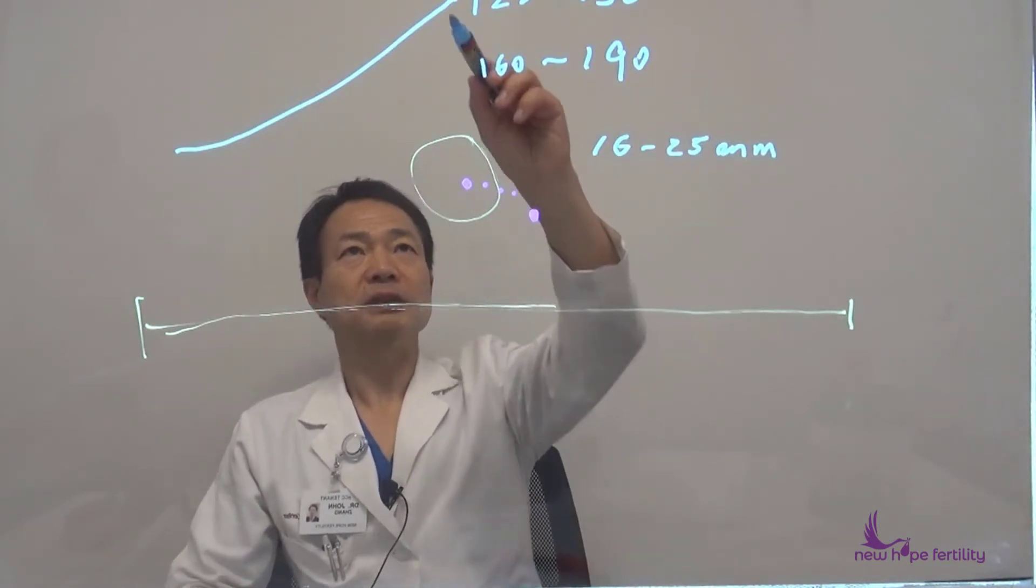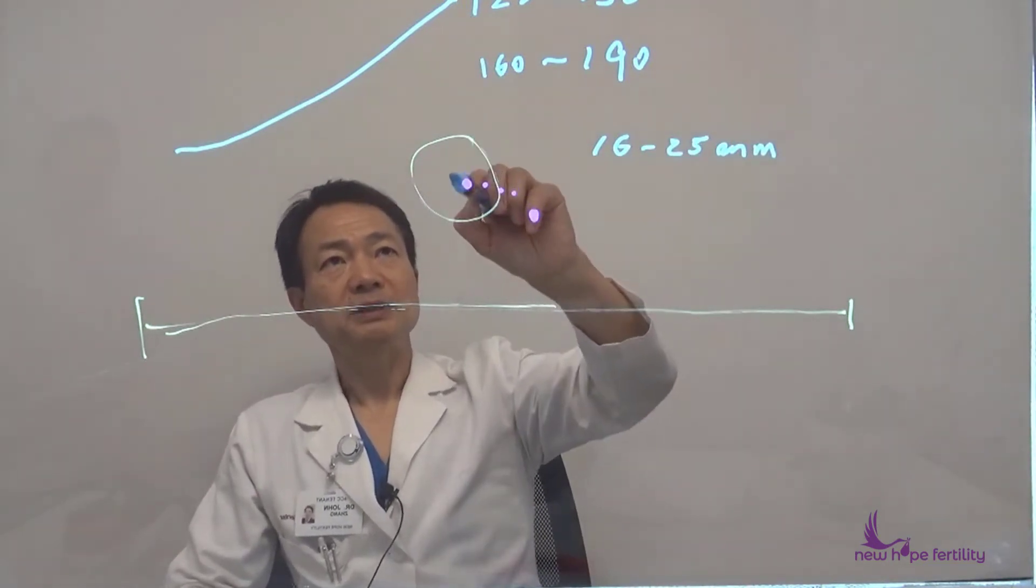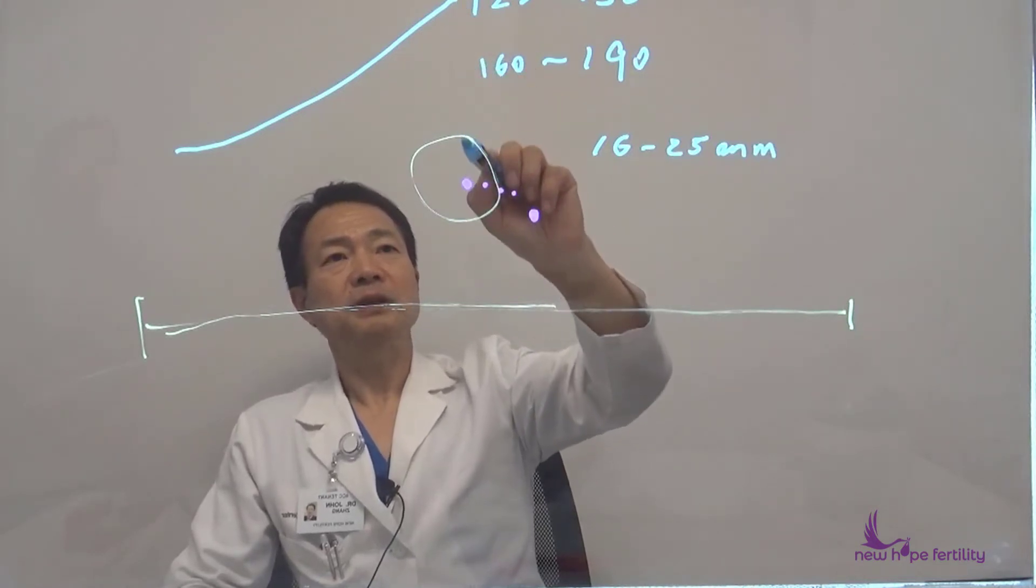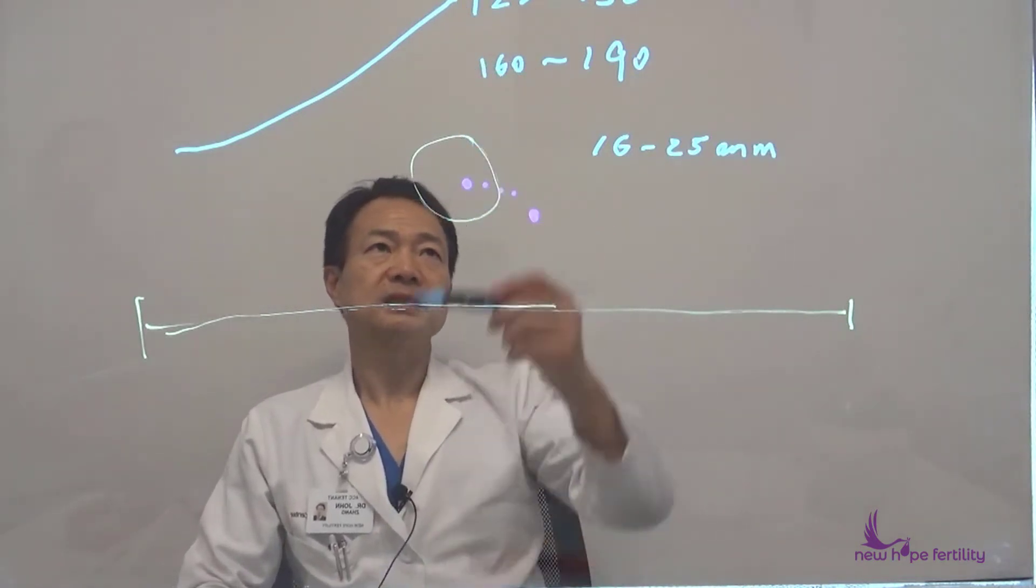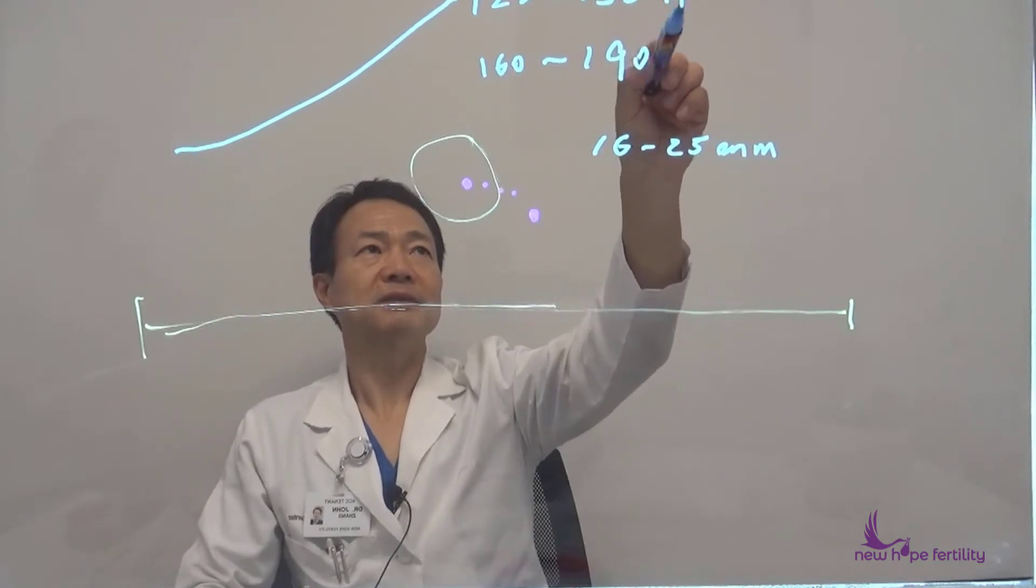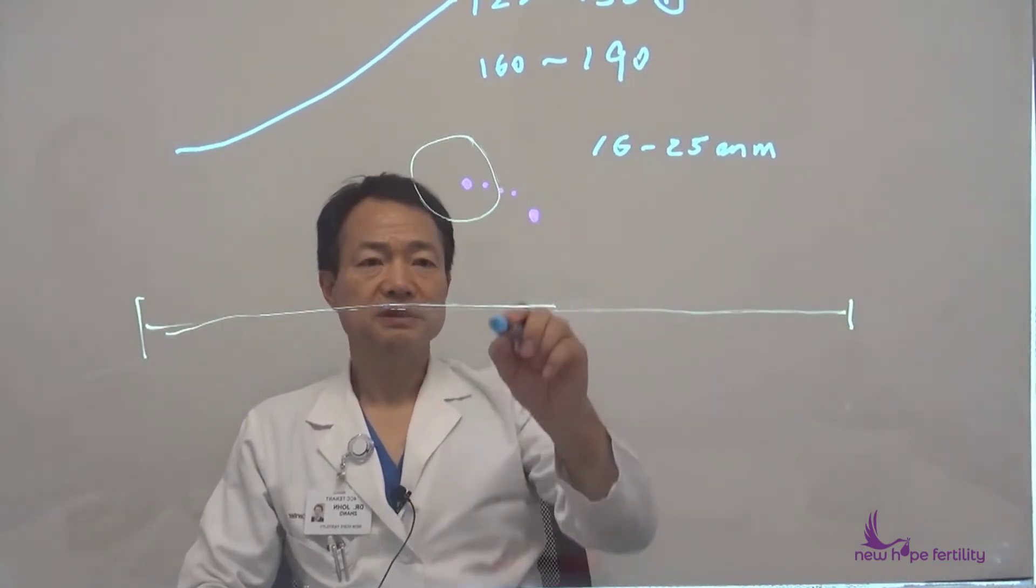The answer is actually based on a few points. Number one: what's your estrogen level? If your estrogen level is getting very high, the follicle may be a little bit smaller when we trigger you. So it's based on your estrogen level.